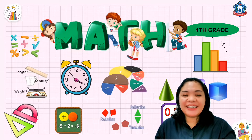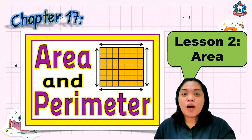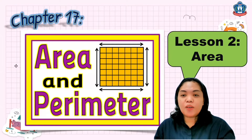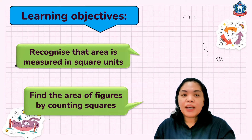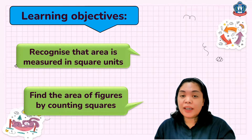Hello B4 students, this is Ms. Claire and welcome one more time in our Math 4 class. We are still on Chapter 17, Area and Perimeter. So in this video, you will learn Lesson 2, it's all about area. The learning objectives for this lesson are to recognize that area is measured in square units and to find the area of figures by counting squares.